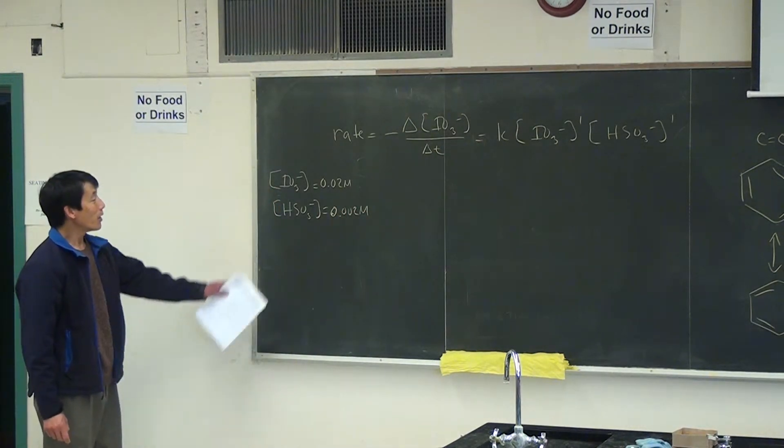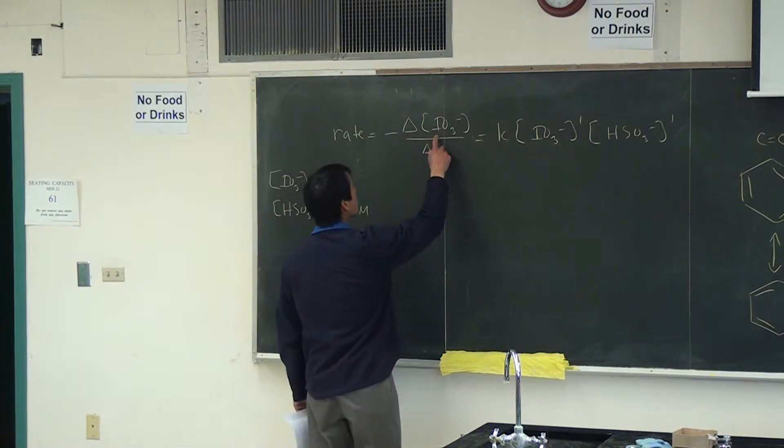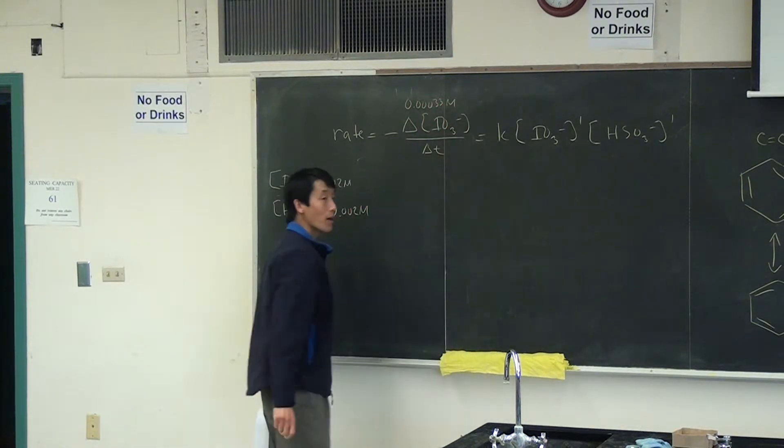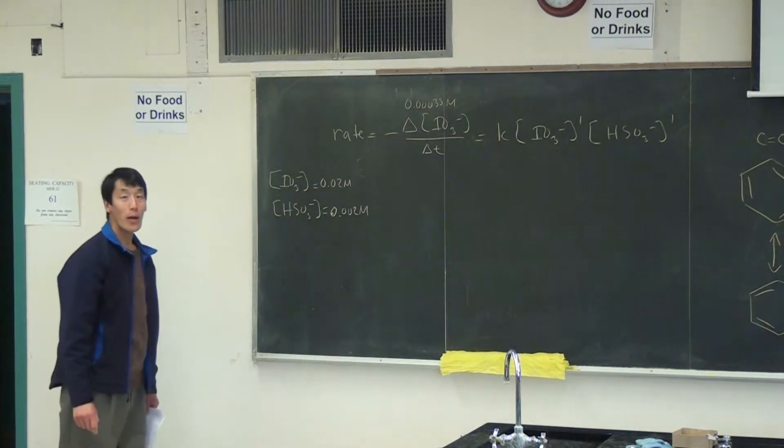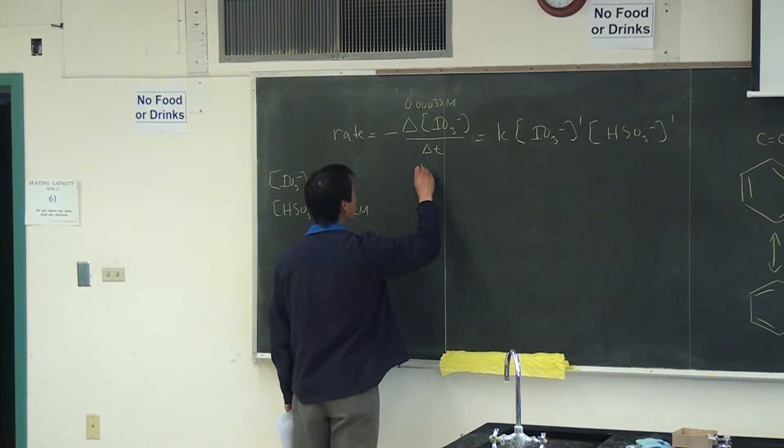okay, so we said that IO3 minus before mixing was 0.02 molar and HSO3 minus was 0.002 molar. And based on these amounts, the IO3 minus, or the change in IO3 minus, this was 0.00033 molar.